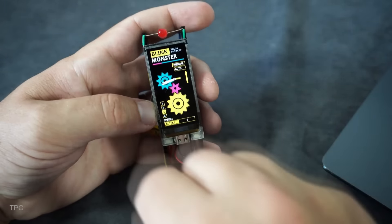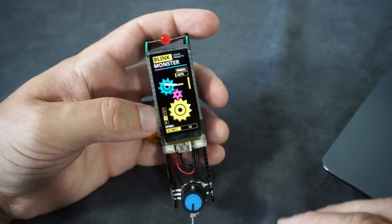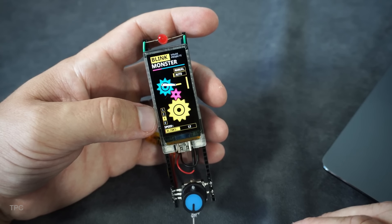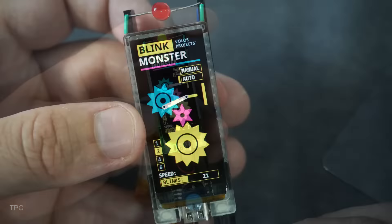There are two control modes. In manual mode, you adjust a potentiometer to activate the circuit. Pressing a button switches it to auto mode, so you can sit back, relax, and enjoy the LEDs blinking effortlessly.